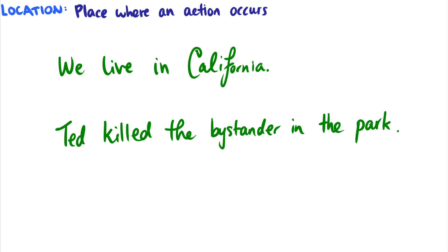Location is the place where an action occurs. We live in California. This is a location because the living is being done in California. This is not the goal because you're not going to California. No, the living is occurring in California. It is the location we're living. Ted killed the bystander in the park. This is a location. This is where the killing took place. These are locations. This is how it's different from a goal.